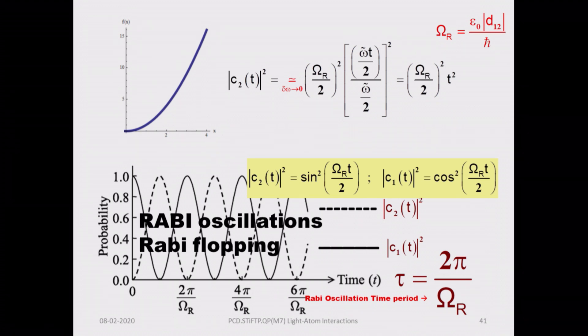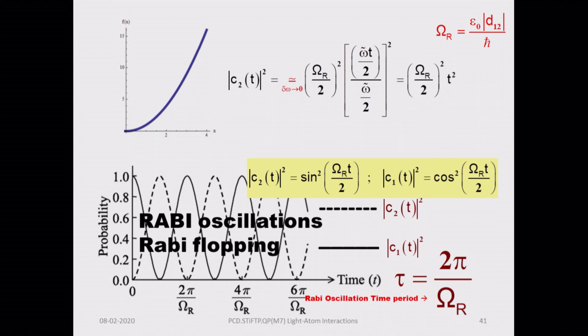These are the Rabi oscillations or Rabi flopping as they are popularly called. The occupation probability changes strictly periodically at the Rabi frequency. This is a welcome change from the quadratic time dependence — it oscillates between 0 and 1.